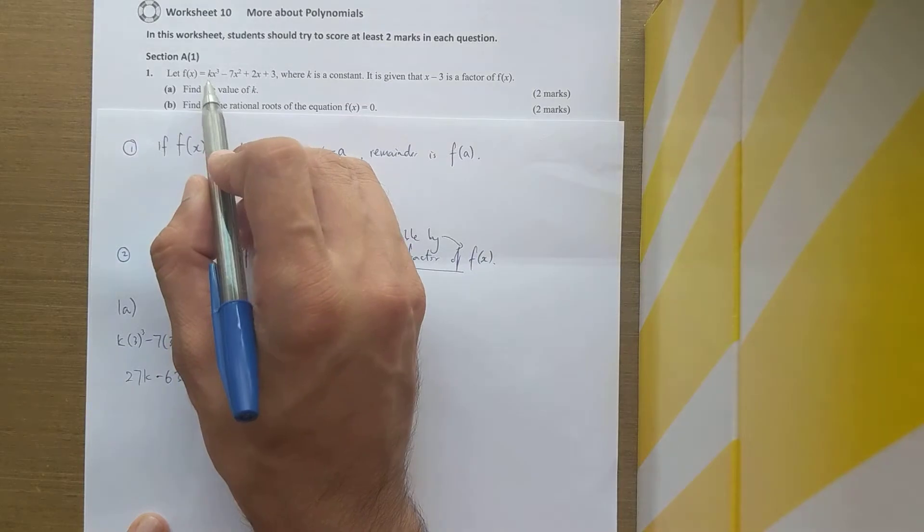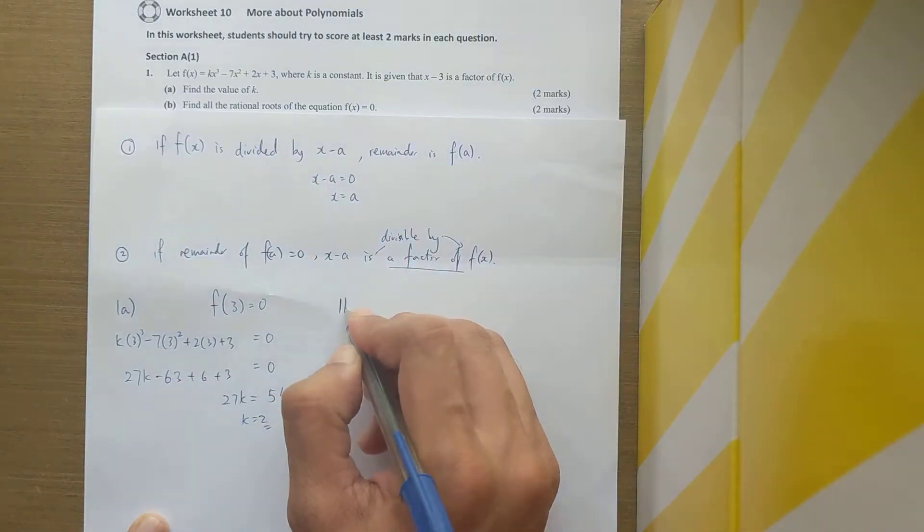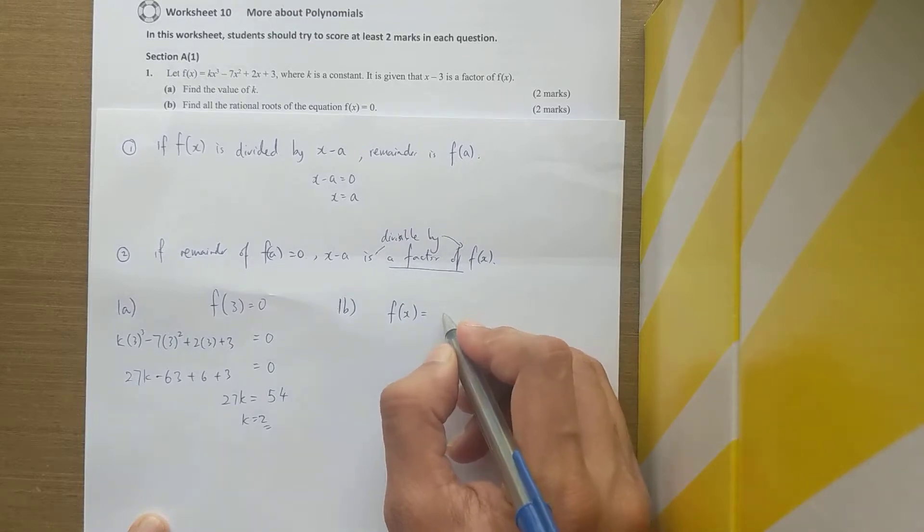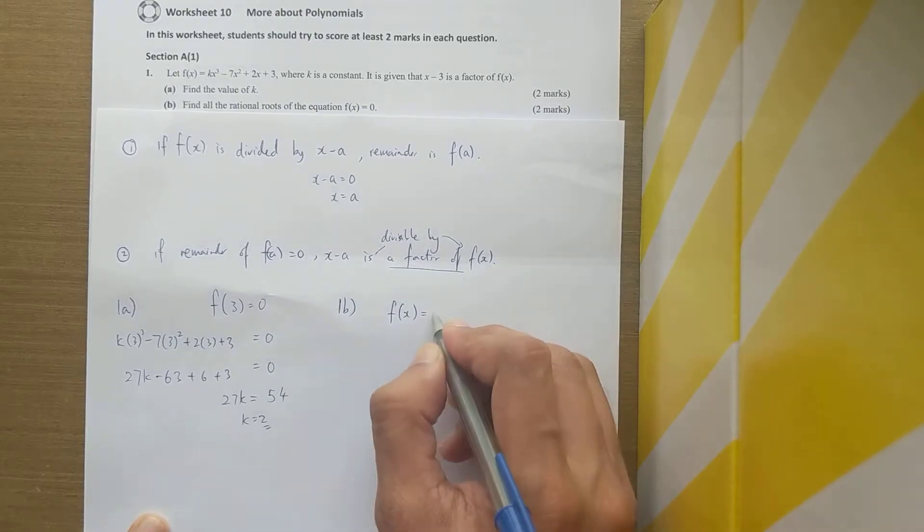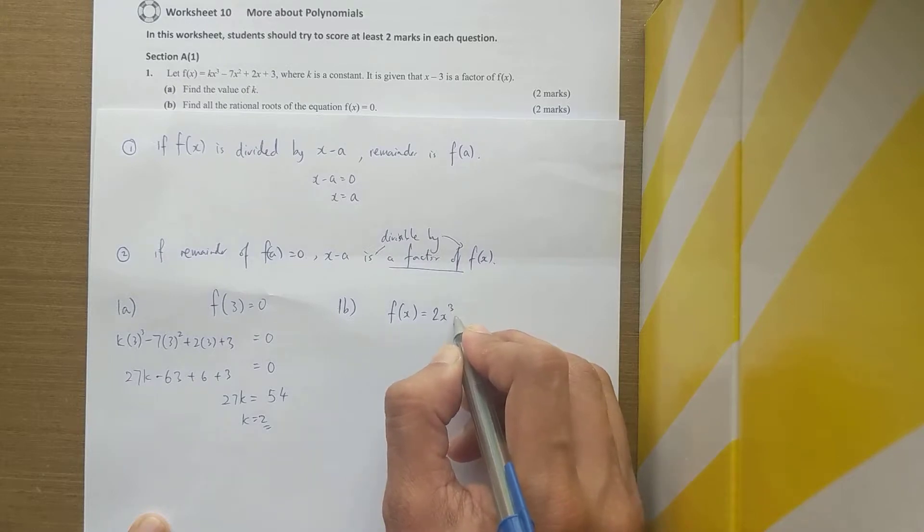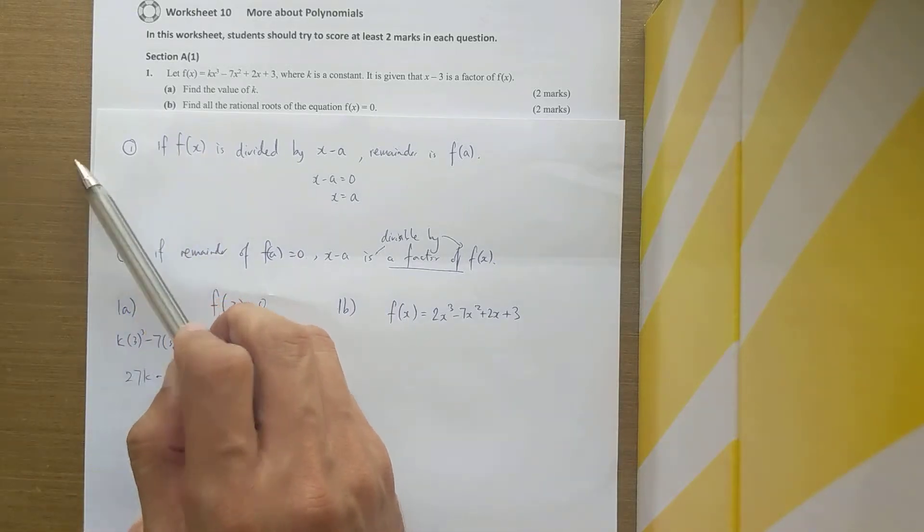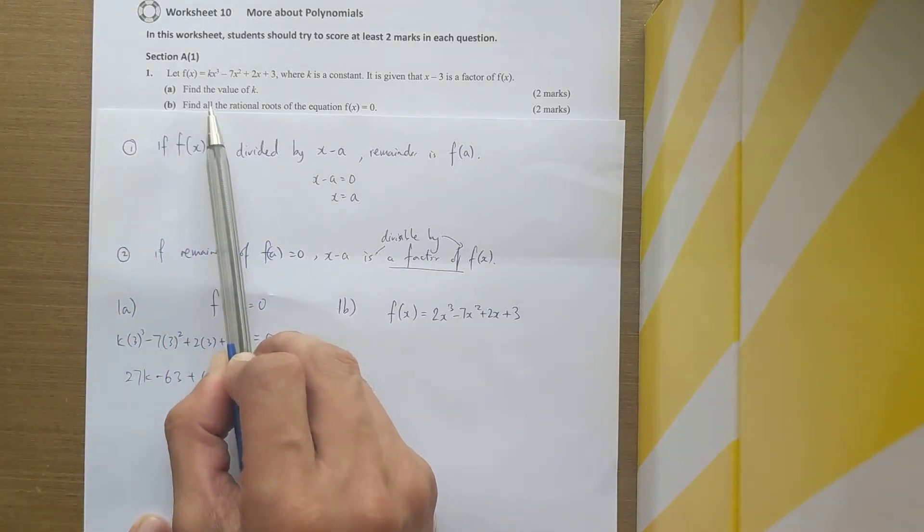When k is found, you will put it back into the equation—that's for part b. So f(x) is now no longer with a k because k is found, so it's 2x cubed minus 7x squared plus 2x plus 3. That's the beginning.